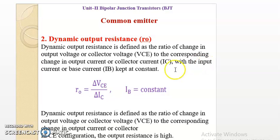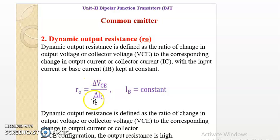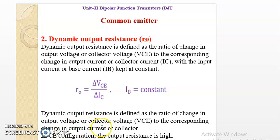The second parameter is output resistance Ro. From this formula, the change in output voltage to the change in output current, when base current is constant, gives a ratio that is called output resistance. Dynamic output resistance is defined as the ratio of change in output voltage to the corresponding change in output — that is collector — current. In CE configuration, the output resistance is very high.